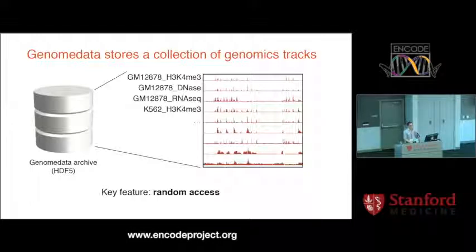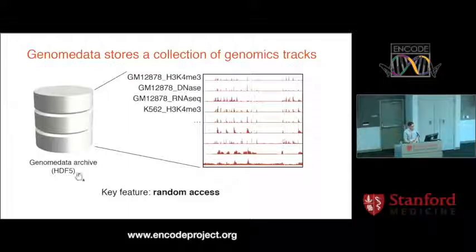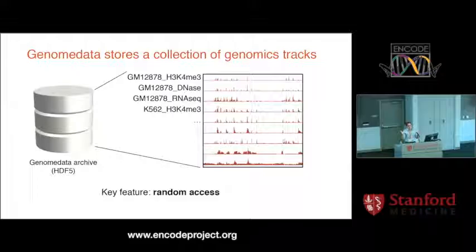Let's start with Genome Data. A Genome Data archive is a big binary file on your file system that contains genomics tracks represented as real values over the genome — for example, a GM12878 H3K4 trimethylation track. One archive can store all your genomics datasets. The key feature is random access: you can query any position in the genome without reading through or loading the whole dataset into memory. It also compresses the data using the HDF5 binary format built for high-performance floating point storage.